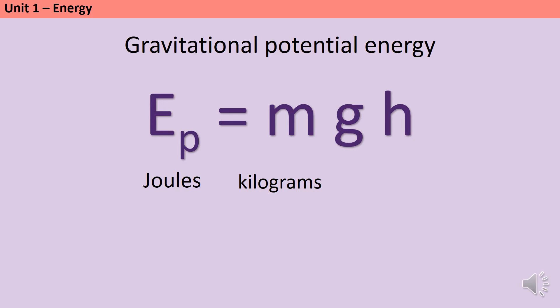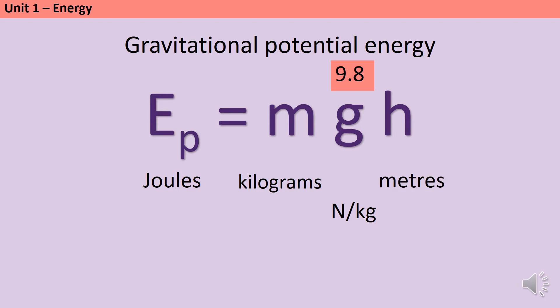Gravitational field strength is in newtons per kilogram and you should know that on Earth this has a value of 9.8. Height is measured in meters and again you may need to convert this from something given in kilometers, centimeters, or millimeters.